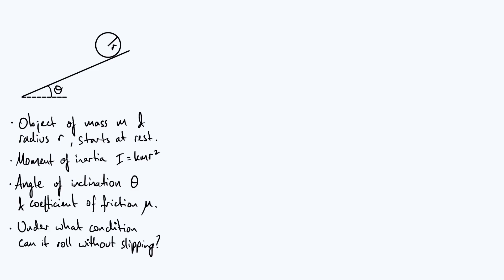We're going to consider the case of a round object rolling down an inclined plane. I've defined all of the key parameters on screen: an object with mass m and radius r which starts at rest and is released to roll down the inclined plane. It could be a sphere, solid cylinder, hollow cylinder, or a disk — any kind of round object. The moment of inertia about the centre of mass is i = k m r², where k is a dimensionless parameter that varies depending on the details of the shape.